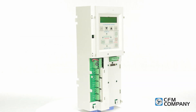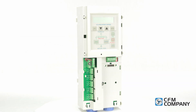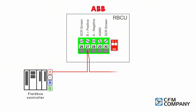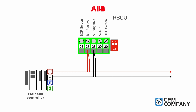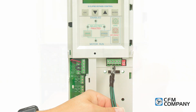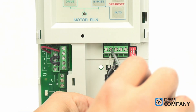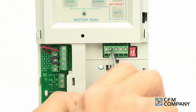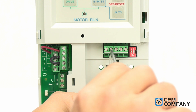Remove the front cover to expose the control terminals. On drives with an Eclipse bypass, the serial communications wires will be landed on the horizontal terminal on the bypass control unit, RBCU. Connect the positive network wire to terminal 27. In our example, this is the white wire.